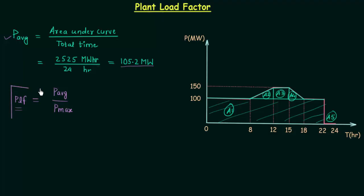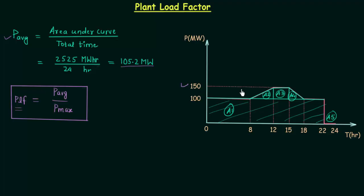First calculate the average power and then find out the maximum power using the load curve. In this load curve you can see 150 MW is the maximum power. After this, find out P average over P max and it will be the plant load factor. This is one way to calculate the plant load factor.